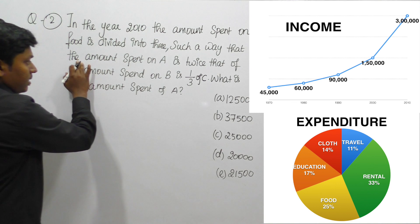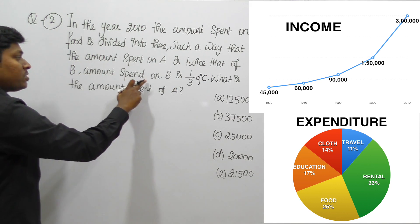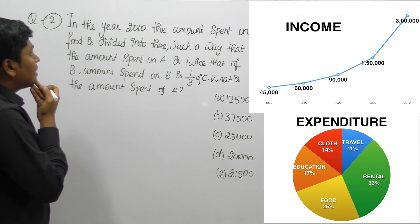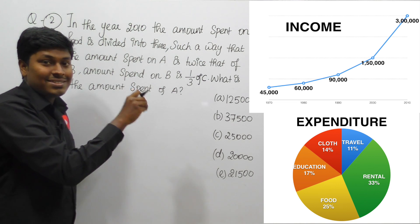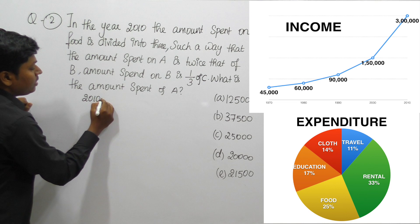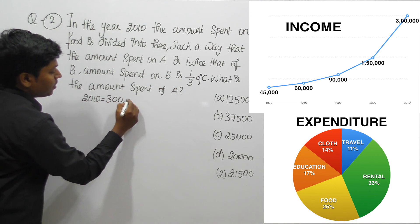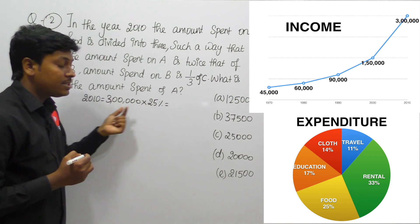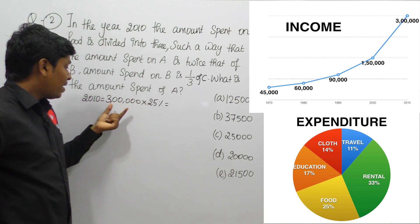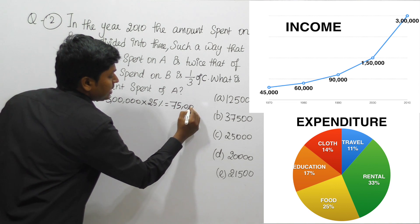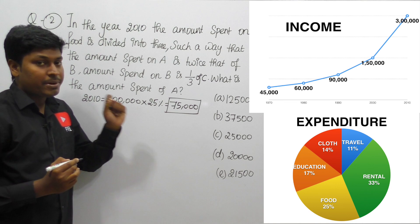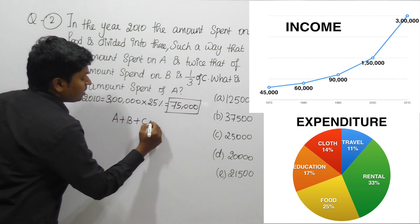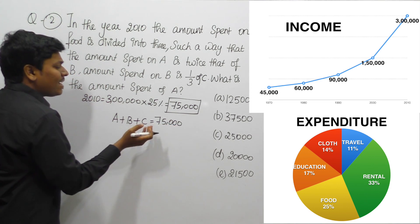Question 2: In the year 2010 the amount spent on food is divided into three parts A, B, and C such that the amount spent on A is twice that of B, and the amount spent on B is one-third of C. What is the amount spent on A? First, in 2010 the family income is 3 lakh. Food expenditure is 25%, which is one-fourth, so 25% of 3 lakh is 75,000. So 75,000 is the amount spent on food, and this is divided into A, B, and C.